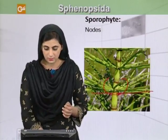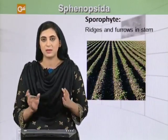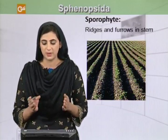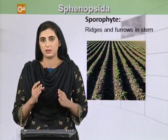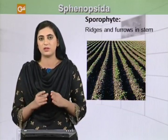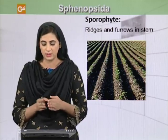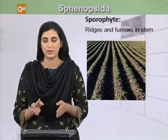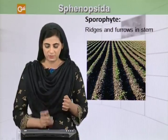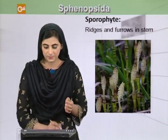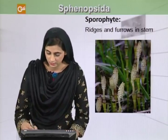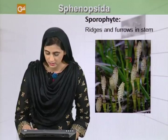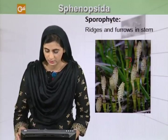The stem is not smooth; instead, it is made up of ridges and furrows, like you can see in this common example of a land plant. You can see here — these are called ridges and these are called furrows.